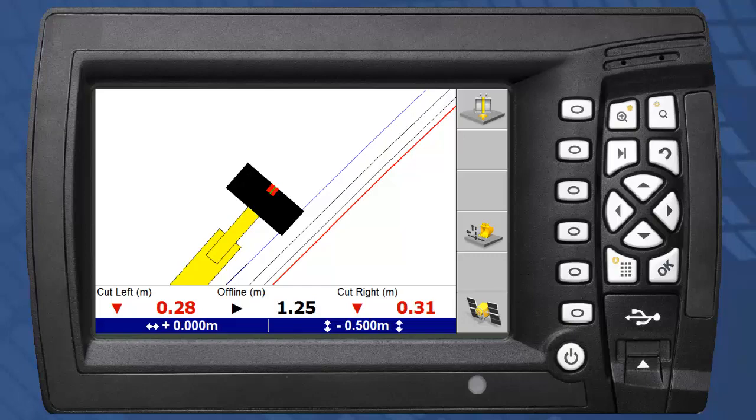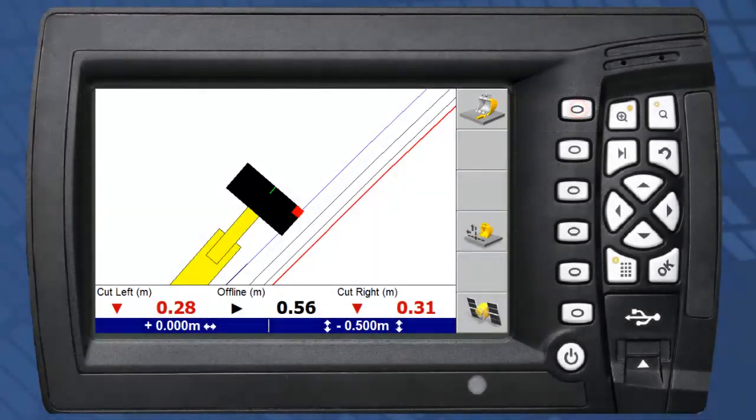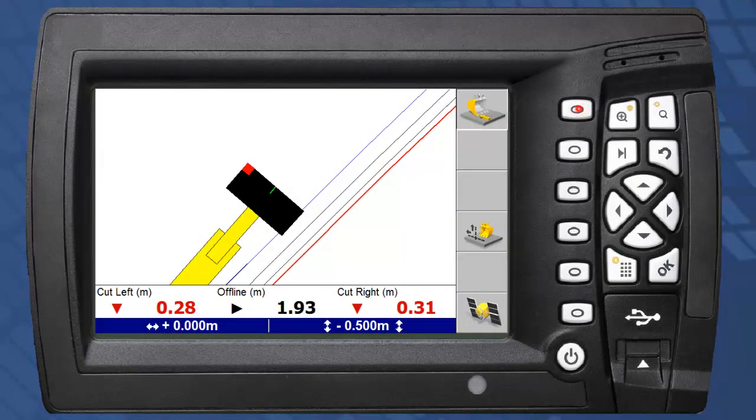The focus point can be changed using the focus soft key. Selecting this soft key toggles the focus between the left corner tip, centre and right corner tip.